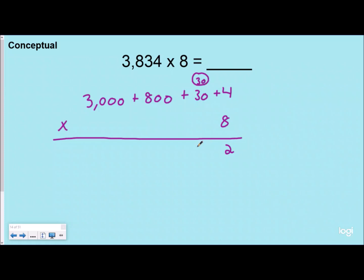And then 8 times 800 would be 6,400 plus 200 would be 6,600, so we need to regroup the 6,000 over here and then we have our leftover 600 here.